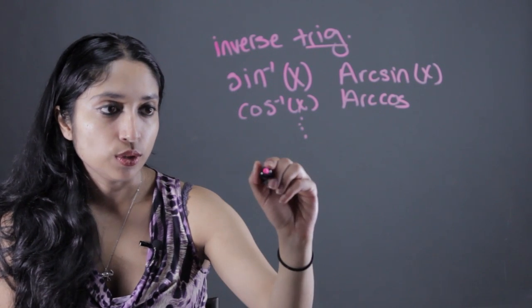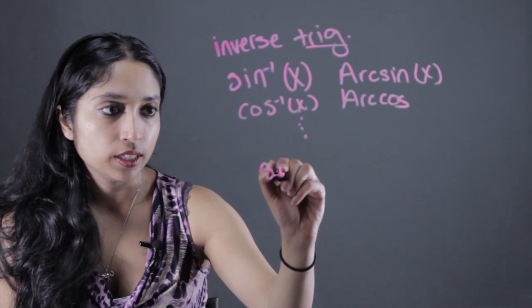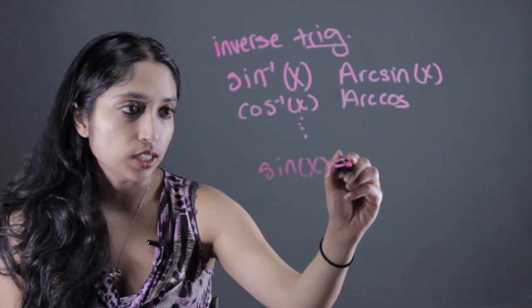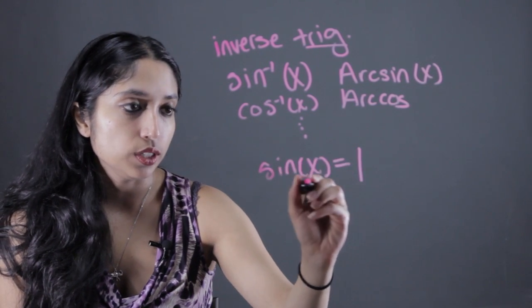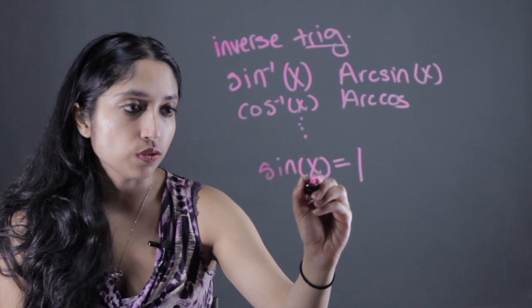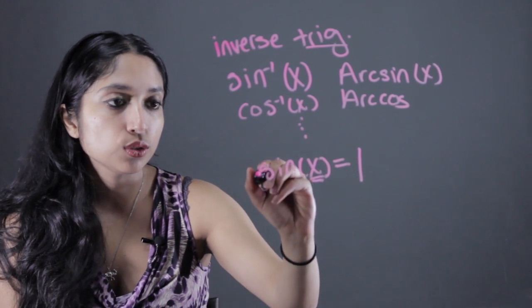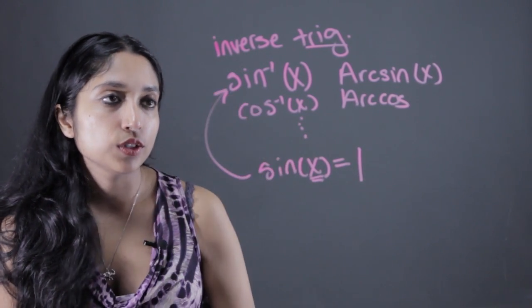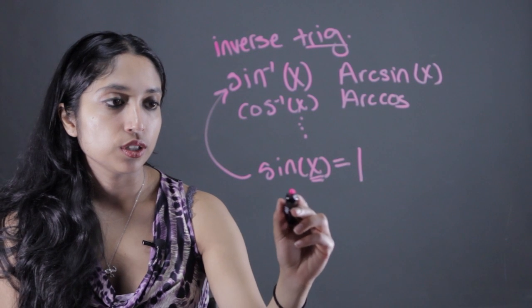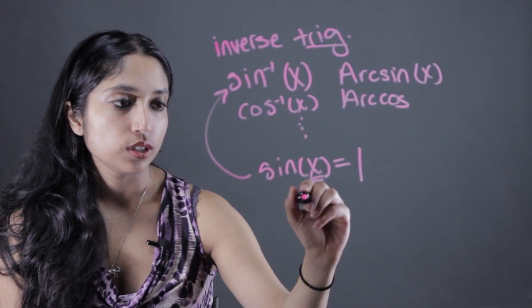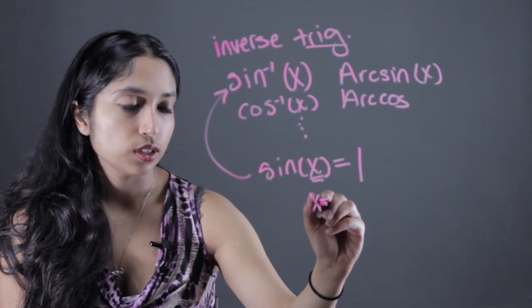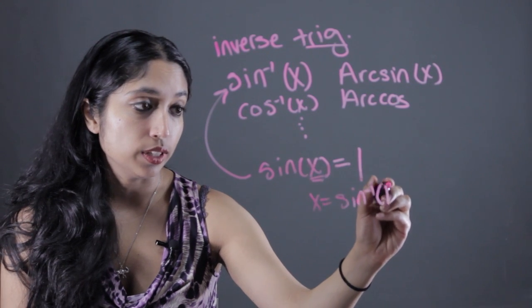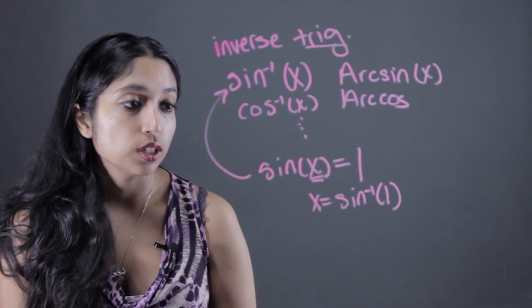So say, for example, you have sine of some angle x equals 1, and you wanted to solve for x — you would use this inverse trig function in order to get and solve for the angle in that equation.